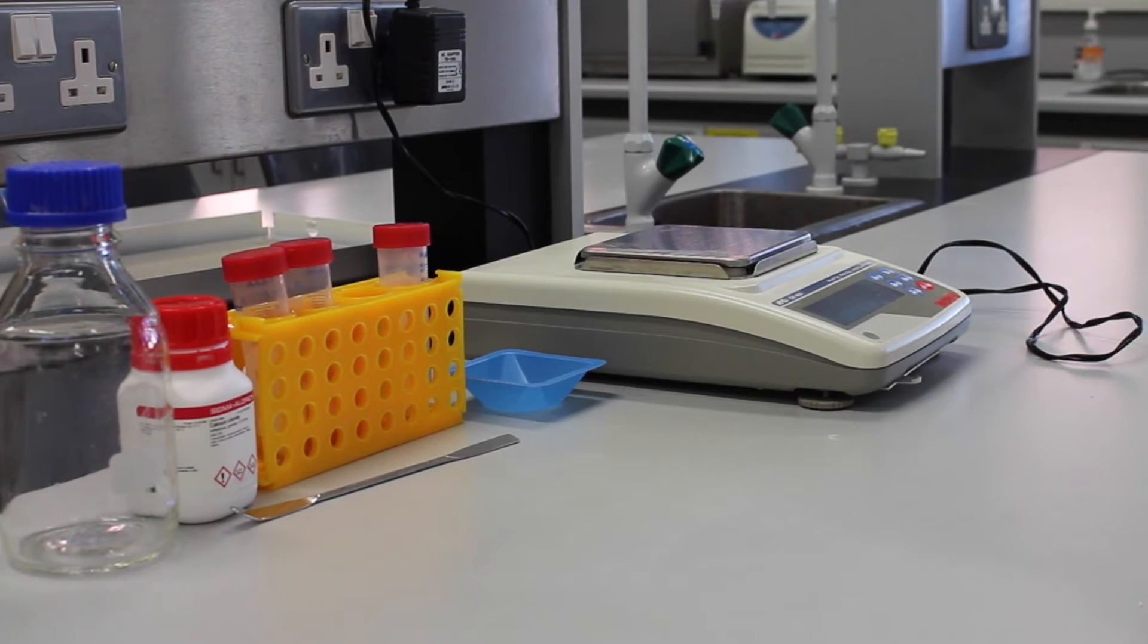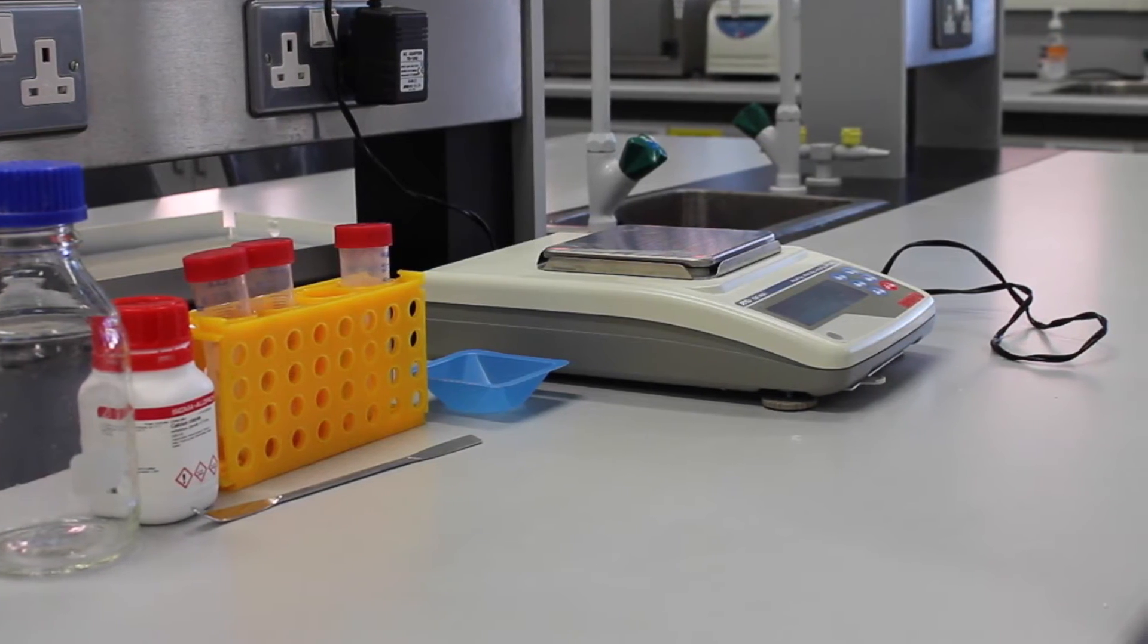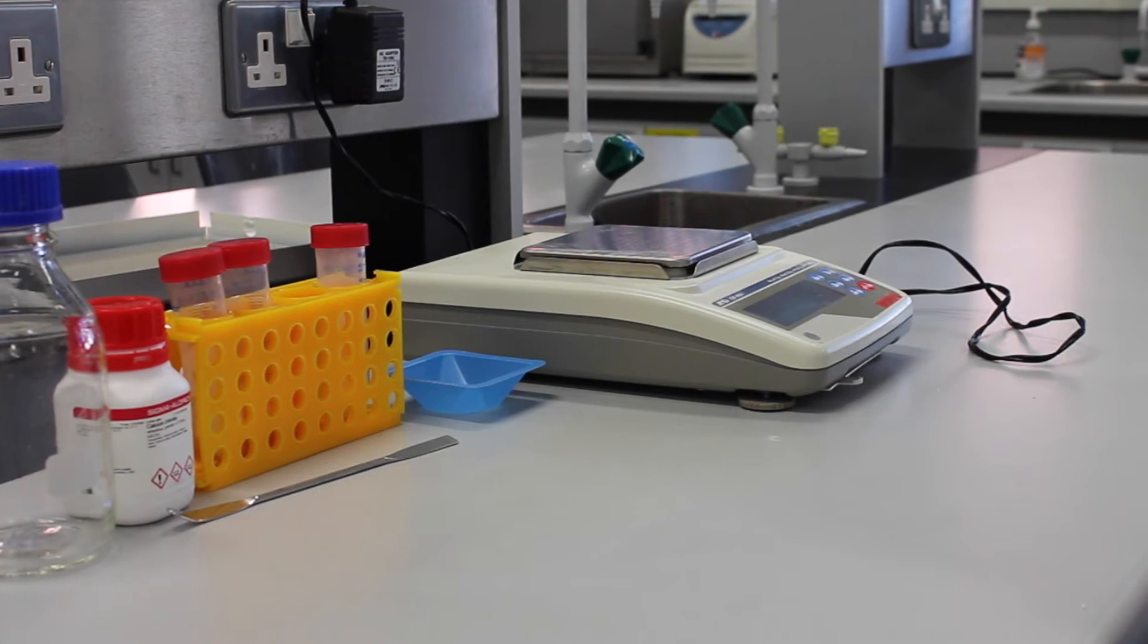Before continuing with the process of making competent cells, make sure to have the CCMB80 buffer. The CCMB80 buffer is prepared by combining in a glass bottle.